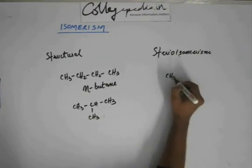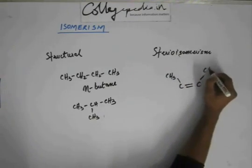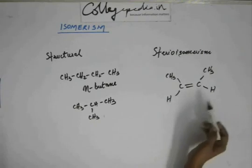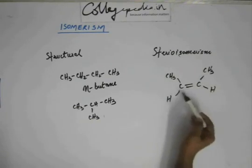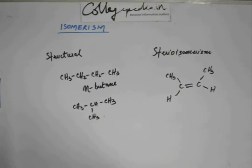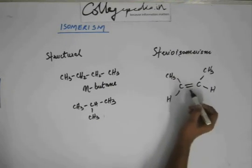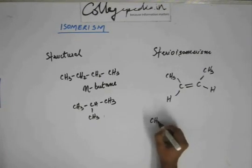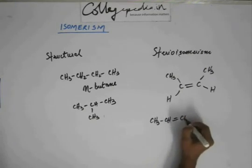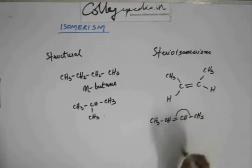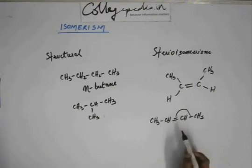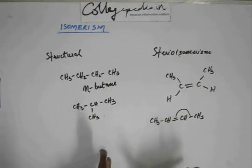If the connectivity does not change — if it remains the same — then it lies in the category of stereo isomerism. For example, suppose this is a compound — this is one form of 2-butene. This carbon is making a pi bond, it is sp2 hybridized, and the bond angle will be 120 degrees. Considering that, I have drawn one structure of 2-butene.